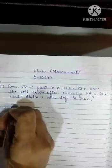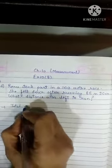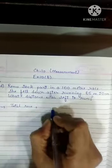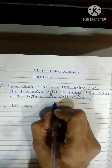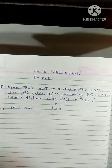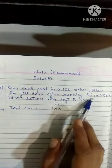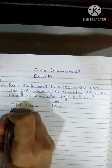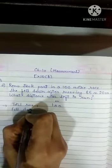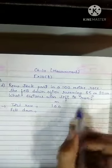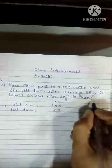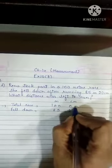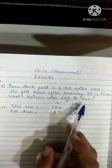Total race: 100 meters. I am writing 'meter' here. She fell down after 85 meters and 20 centimeters. So this is the column of centimeter and there is no digit in the meter column — I am writing 00. What distance was left to run?